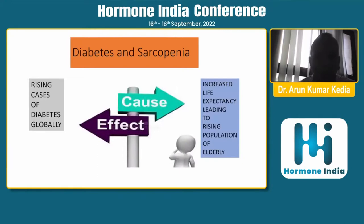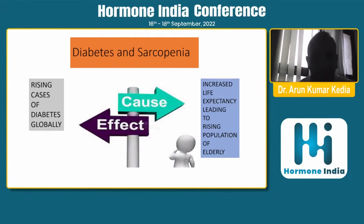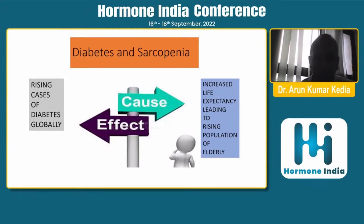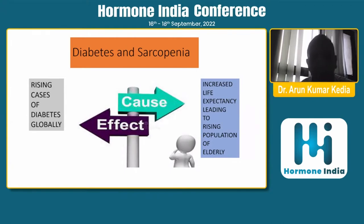Diabetes and sarcopenia overall form a bidirectional link. We do not know what causes what — it could be diabetes causing sarcopenia, or the other way around: sarcopenia could lead to exacerbation of diabetes. We have rising cases of diabetes globally, and increasing life expectancy is leading to a rising elderly population who are likely to suffer from sarcopenia, which in turn could lead to exacerbation, uncontrolled, or new onset diabetes.